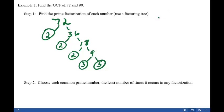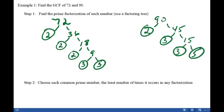Now let's look at 90. 90 can be broken down into 2 times 45, 45 can be broken down into 3 times 15, and 15 can be broken down into 3 times 5. And again, at the end of each branch is a prime number.